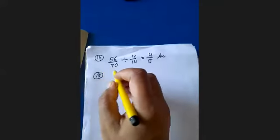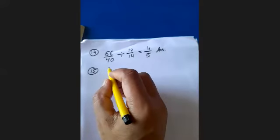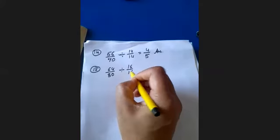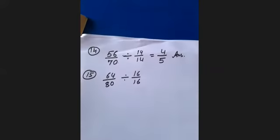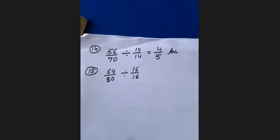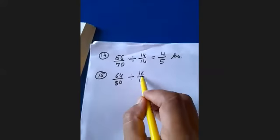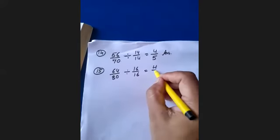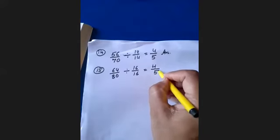Question 15: 64 upon 80. Both 64 and 80 are multiples of 16. Divide 64 by 16: 16 times 4 is 64; 16 times 5 is 80. So your answer for question 15 is 4 upon 5.